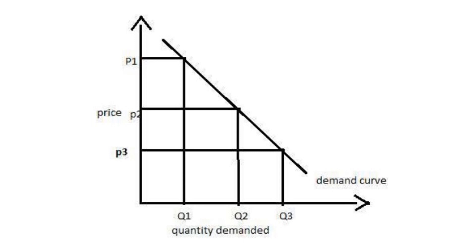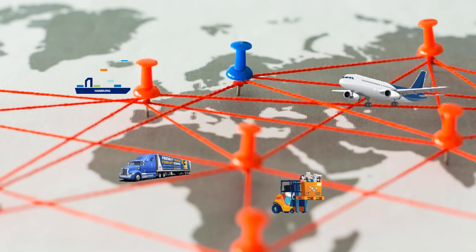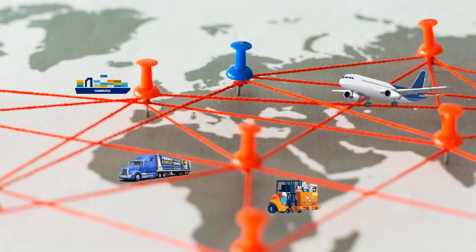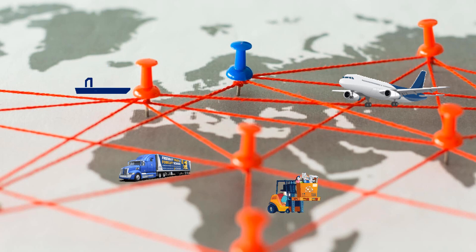Collaboration among supply chain partners, including suppliers, manufacturers, and distributors, is vital for optimizing inventory management. Sharing information and coordinating activities help reduce lead times, minimize stock-outs, and improve overall efficiency.